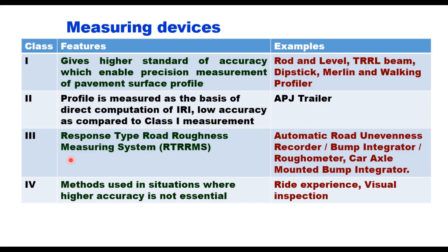In Class 3, you have response type road roughness measurement systems like automatic road unevenness recorder, bump integrator, graphometer, and car axle-mounted bump integrator, among others. Class 4 is not exactly a device — it is based on visual inspection or riding experience, and these methods are used in situations where high accuracy is not required.